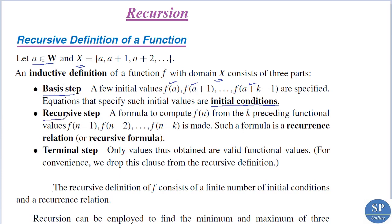The second step is the recursive step. The recursive step contains a formula to compute f(n) using k preceding functional values of f at the points n-1, n-2, ..., n-k. Such a formula is called a recurrence relation or recursive formula. That is, in the recursive step we find a formula to compute f(n) by using the preceding values of f at the points n-1, n-2, ..., n-k.